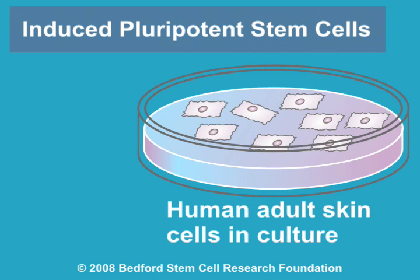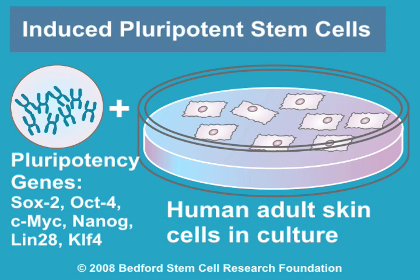scientists decided to introduce extra copies of the pluripotency genes into normal adult skin cells in culture by infecting those cells with special laboratory viruses that had been engineered to contain the pluripotency genes.